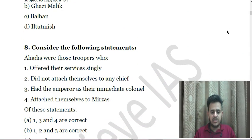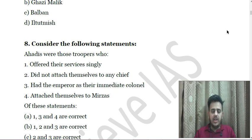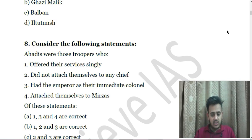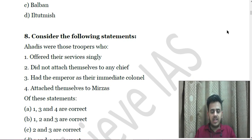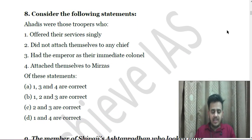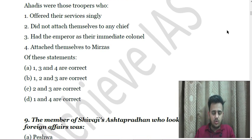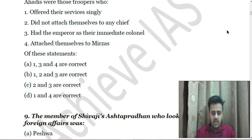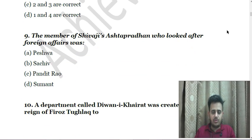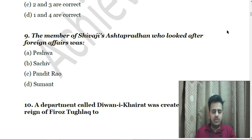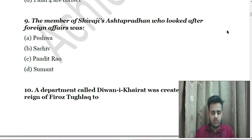Next: Consider the following statements — Ahadis were those troopers who first offered their services singly, second did not attach themselves to any chief, third had the emperor as their immediate colonel, fourth attached themselves to the Mirzas. Choose the correct answer. Next: The member of Shivaji's Astapradhan who looked after foreign affairs was — A. Peshwa, B. Chief, C. Pandit Rao, D. Sumant.